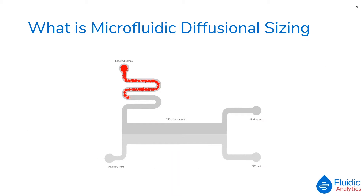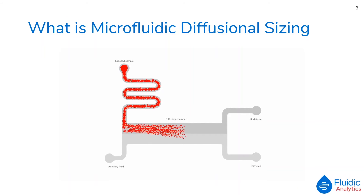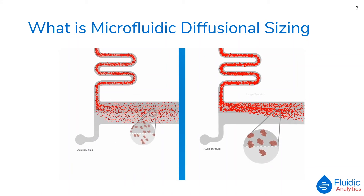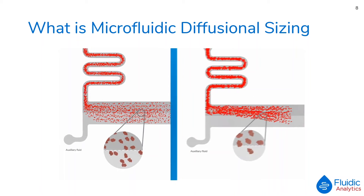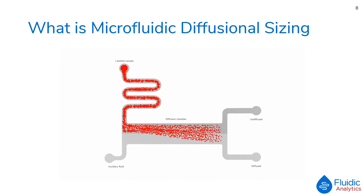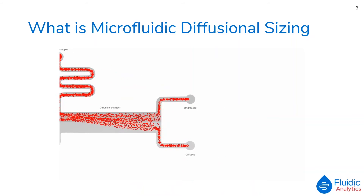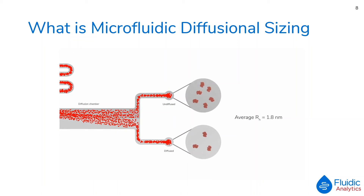The following video explains how microfluidic diffusional sizing works. In the Fluidity 1W, a stream of fluorescently labelled protein is introduced into the diffusion chamber alongside an auxiliary stream. These streams flow in parallel with no convective mixing, so the only way protein can migrate from one stream to the other is by diffusion. Small peptides and proteins diffuse rapidly; large proteins and aggregates diffuse slowly. At the end of the diffusion chamber the streams are split, and the quantity of protein in each stream is determined by the fluorescence from the label.